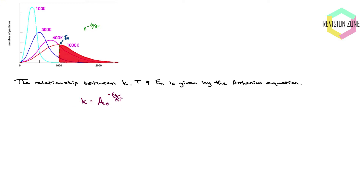Let's look at each component of the Arrhenius equation. The first is the rate constant K, which is proportional to the rate. It's sometimes difficult to measure the rate directly, so we use values proportional to the rate — specifically 1/t (one over time), which is proportional to the rate in mol dm⁻³ s⁻¹. That will be useful when we analyze and calculate activation energy.